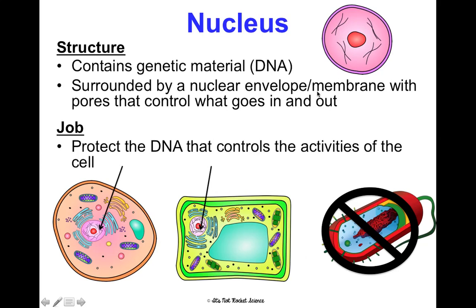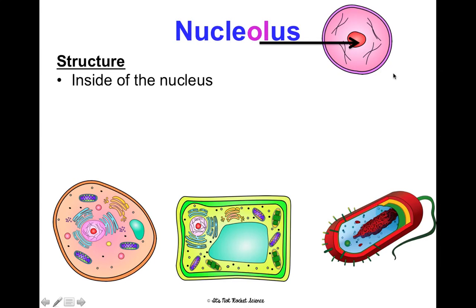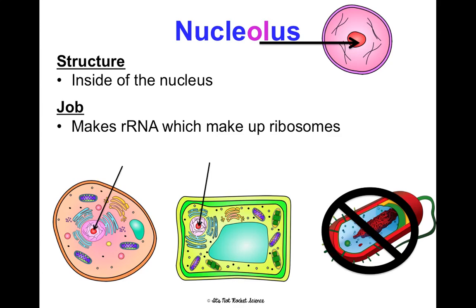Inside the nucleus is the nucleolus. Its job is to make rRNA, which stands for ribosomal RNA. The rRNA is what makes up the ribosomes, which is another organelle. Since prokaryotic cells have no nucleus, they also have no nucleolus.